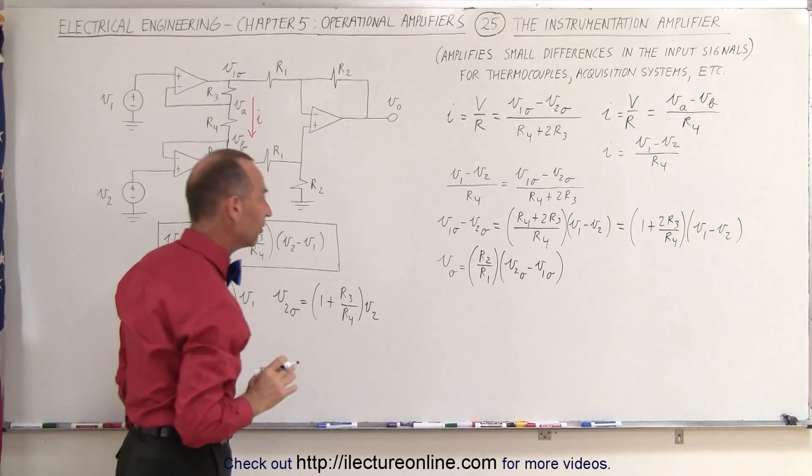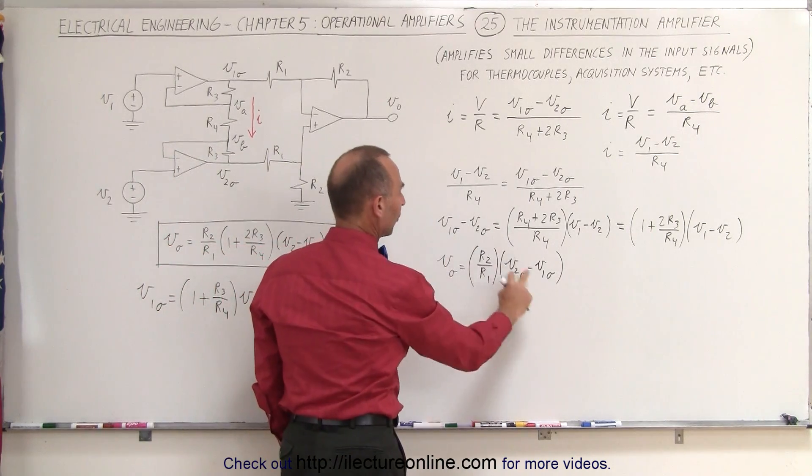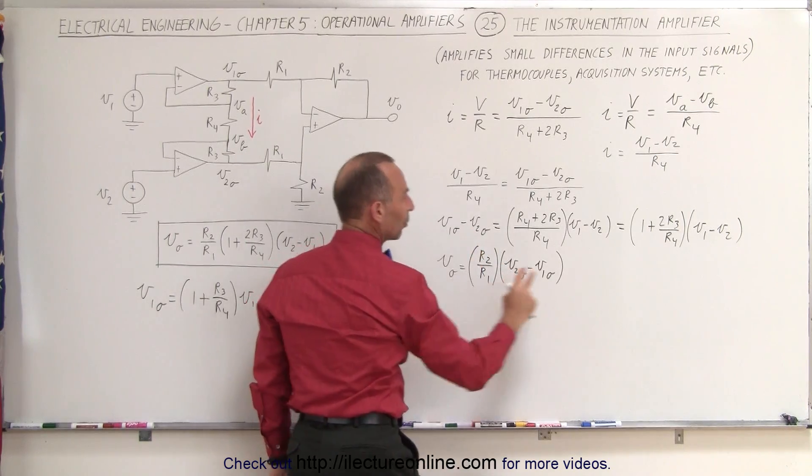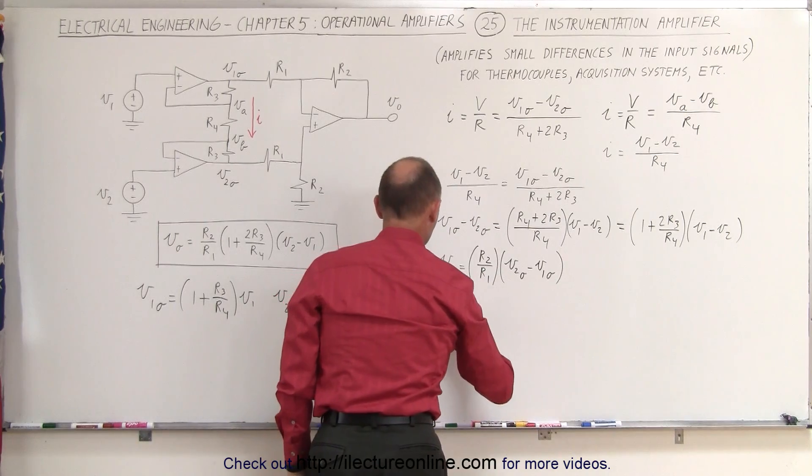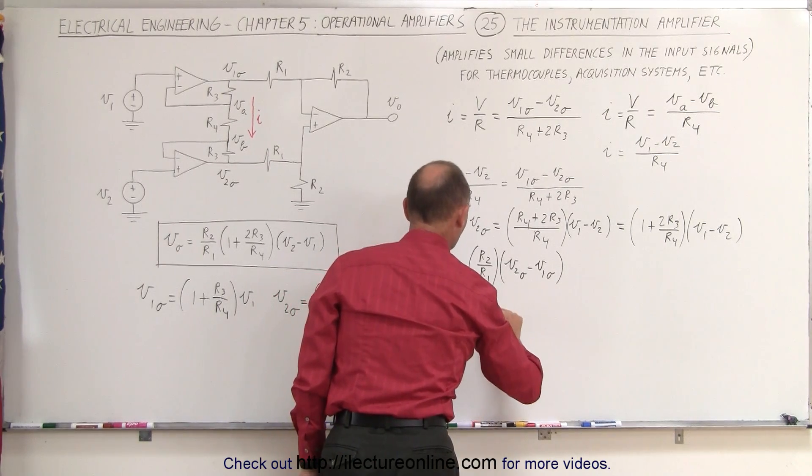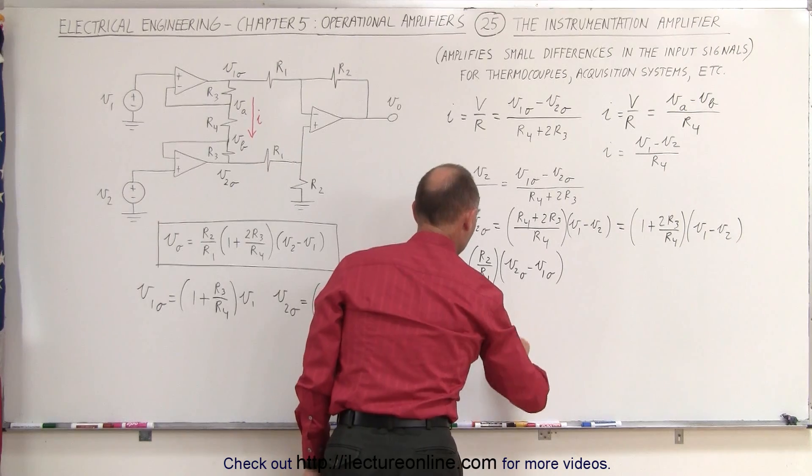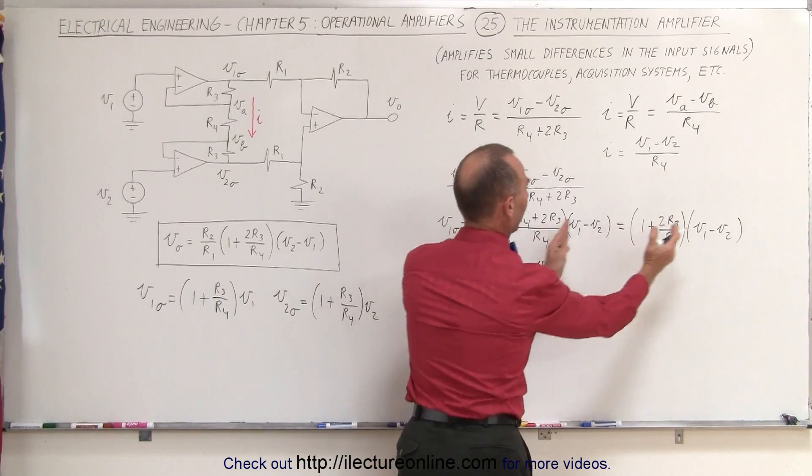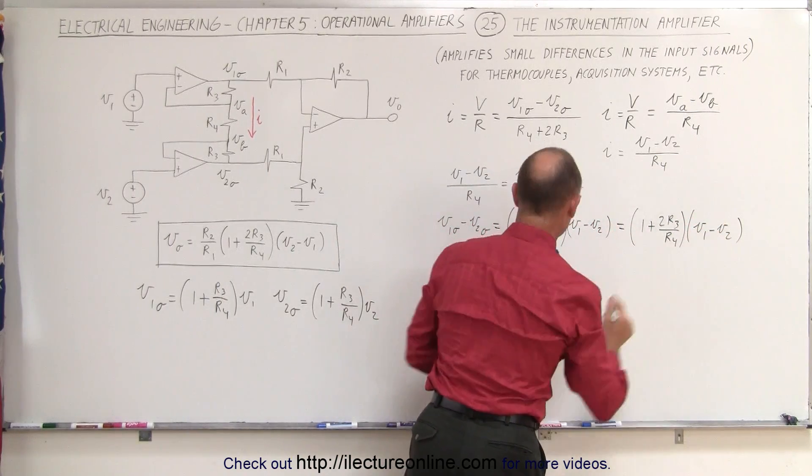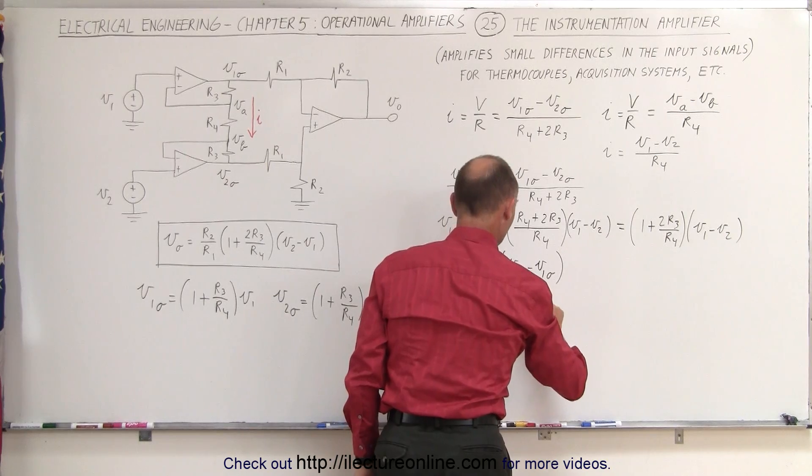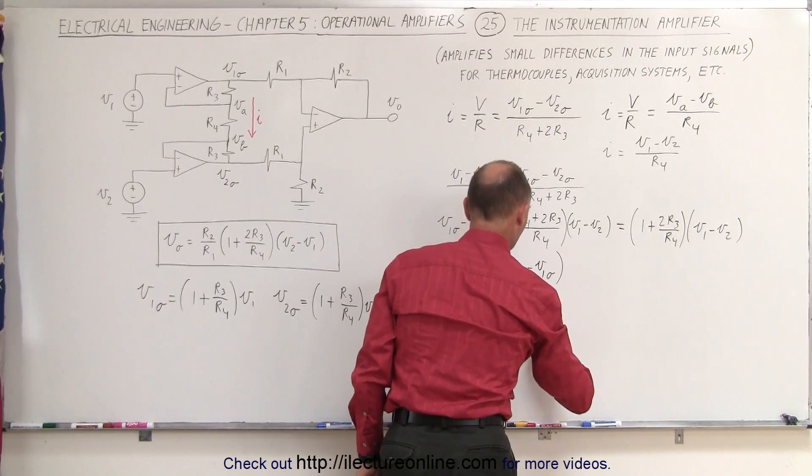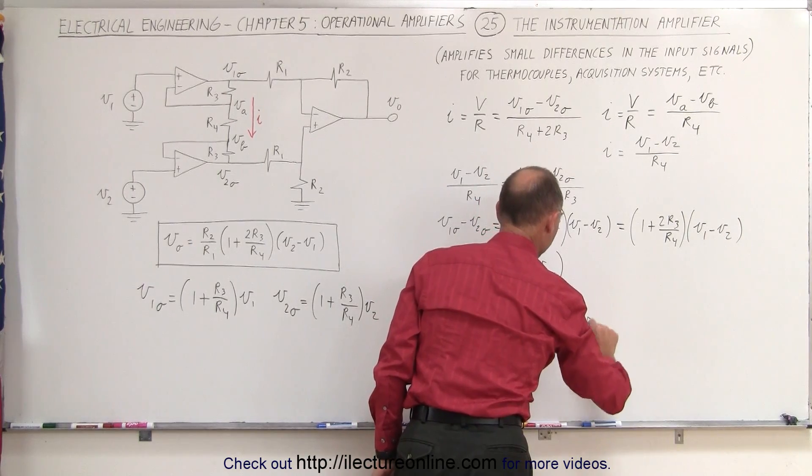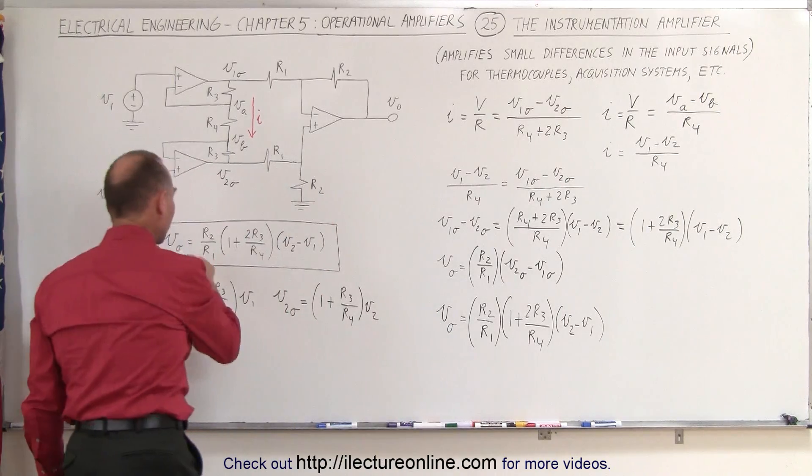And now notice where I have this reversed. So what I'm going to do now is I'm going to replace this by the inverse of that, which means I need to inverse this as well. So we can say that the V output is equal to the ratio of R2 over R1 times the inverse of this, which is this quantity right here. So times 1 plus 2R3 over R4 multiplied times, now this becomes V2 minus V1. And that's the exact same equation that we have over here.